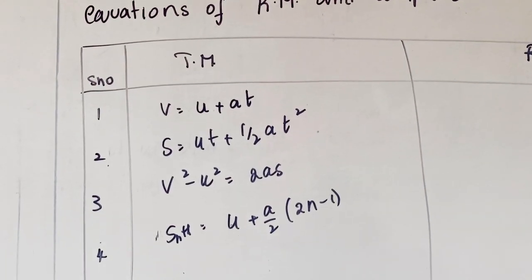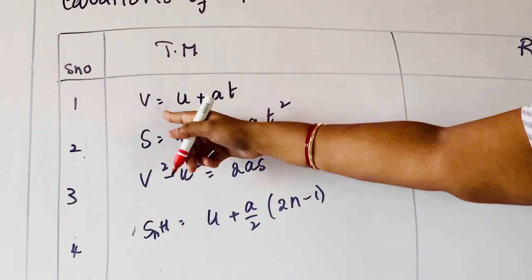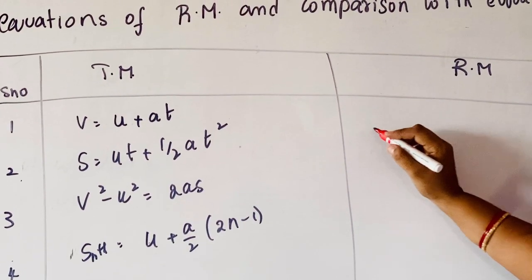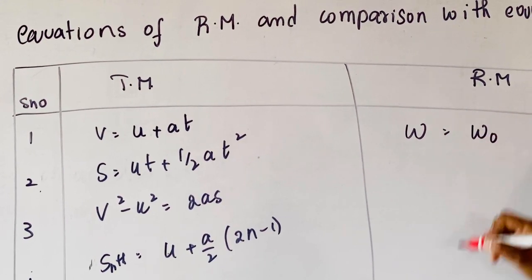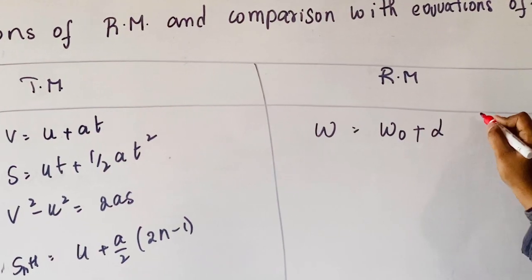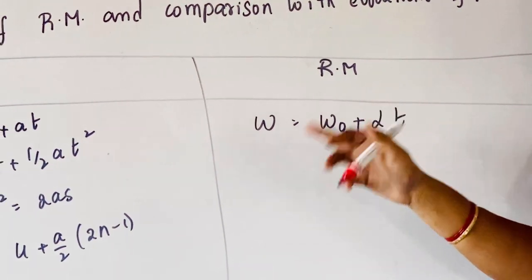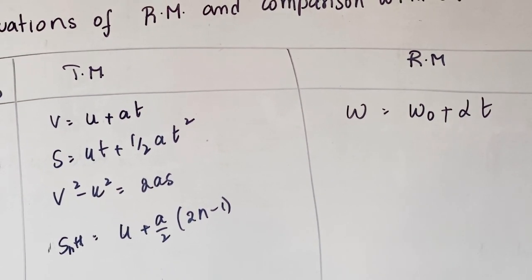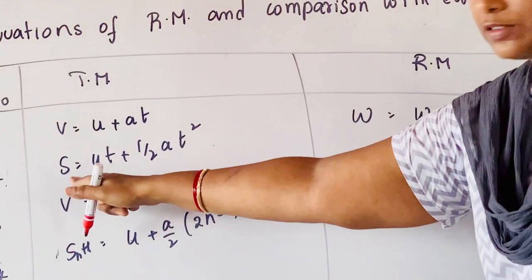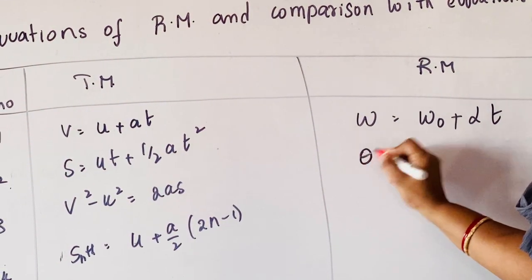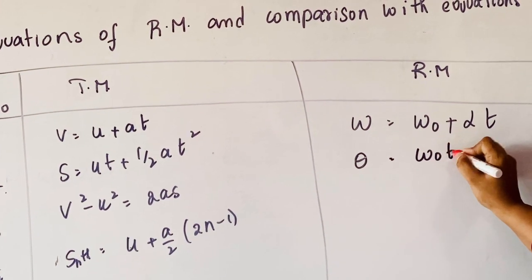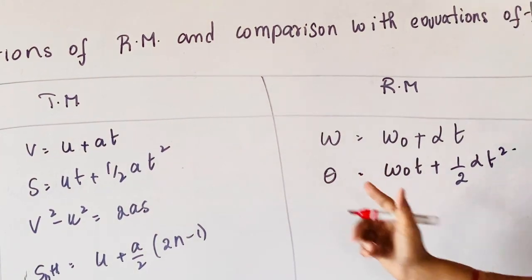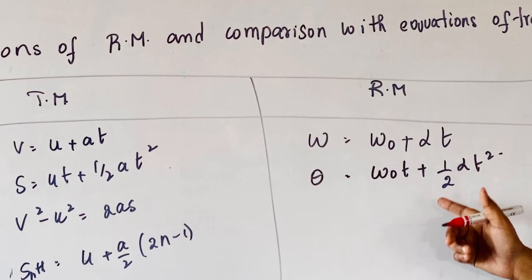Similar to those equations, we write the analogous equations of rotatory motion. Here final velocity v is replaced by omega (final angular velocity), initial velocity u by omega-naught, and acceleration a by alpha (angular acceleration). So the first equation becomes omega equals omega-naught plus alpha·t. The second equation: theta equals omega-naught·t plus half·alpha·t-squared, where theta is the angular displacement.